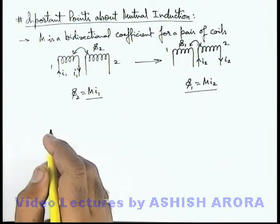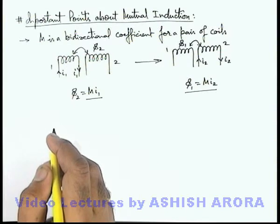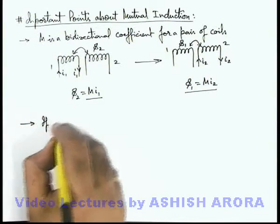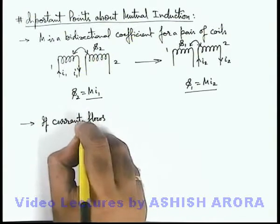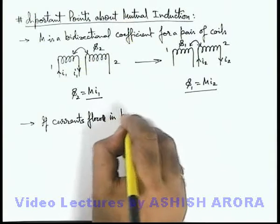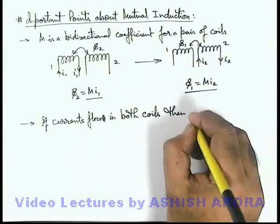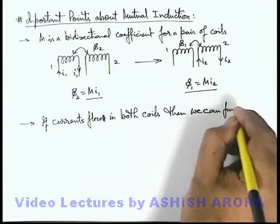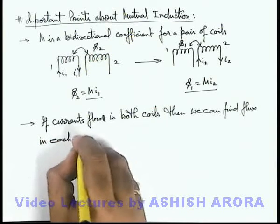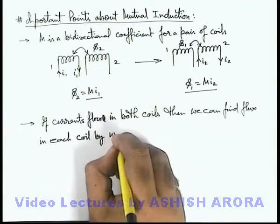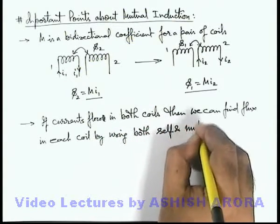Similarly, we sometimes need to understand one more phenomenon: if currents flow in both coils simultaneously, then we can find the flux in each coil by using both self and mutual induction.